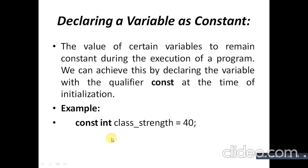To declare a variable as constant — if you want the value of a certain variable to remain constant during the execution of the program, you can achieve this by declaring the variable with the qualifier 'const' at the time of initialization. For example, declaring 'const int class_strength = 40' makes class_strength a constant variable with a fixed value of 40.